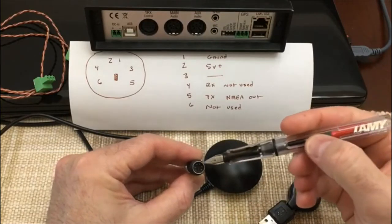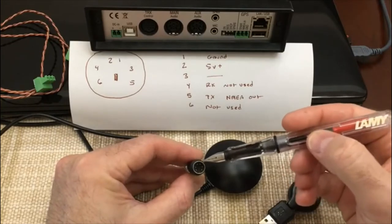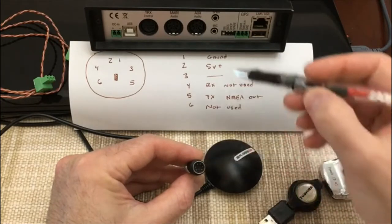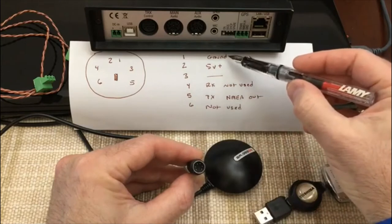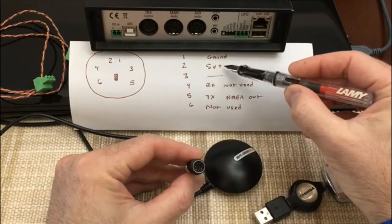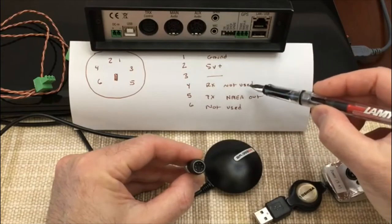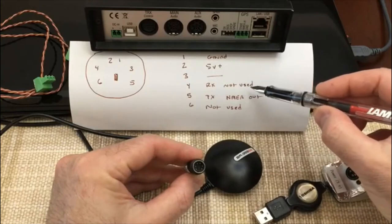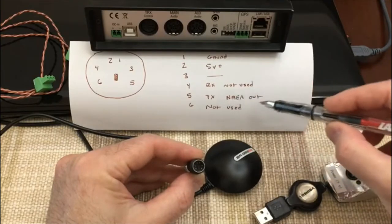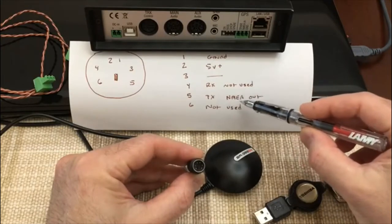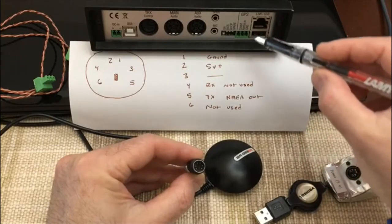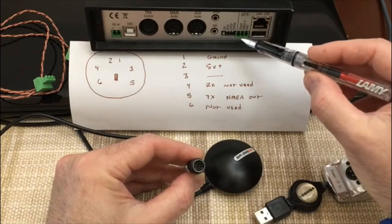The pins on here, 1 through 6, correspond to ground for pin 1, 5 volts of power, and then an RX which is an input to the GPS and a TX which is an output for the NEMA type data, and that's what goes out to this SCS modem.